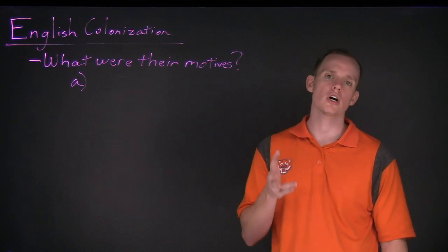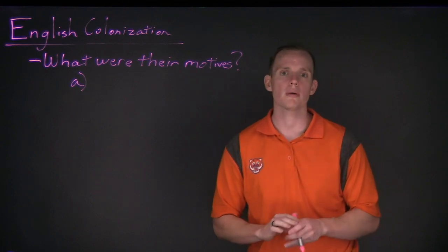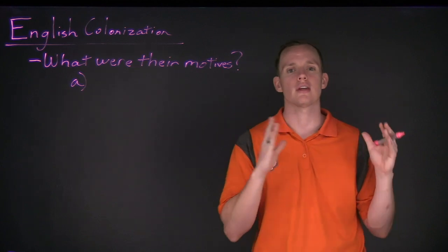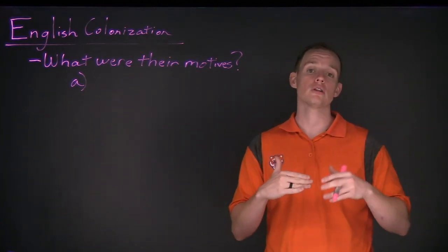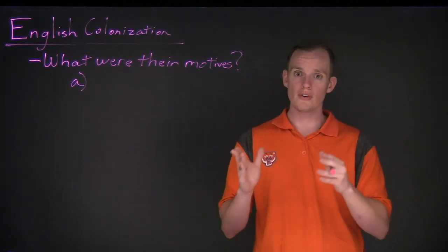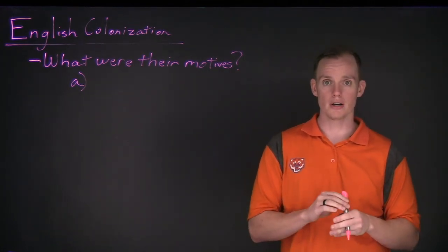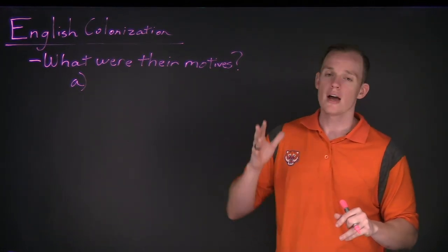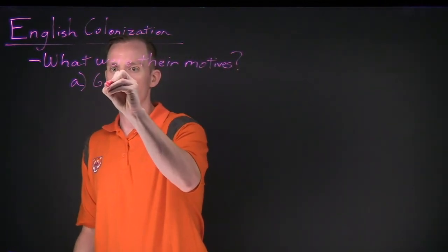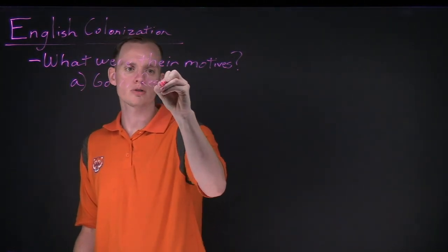Before talking about the first English colony at Jamestown in 1607, let's discuss why the English were exploring — what were their motives? What fueled English expansion into North America was very similar to what we saw with the Spanish and French. When they arrived on the American continent by the late 1500s, the major resource they were looking for was gold — valuable commodities worth bringing back to England.